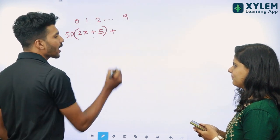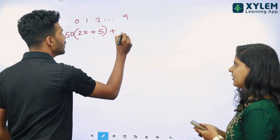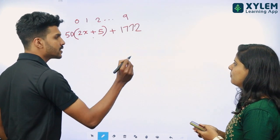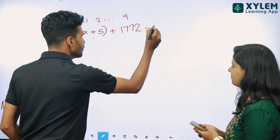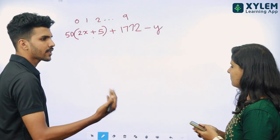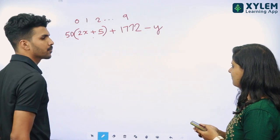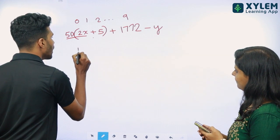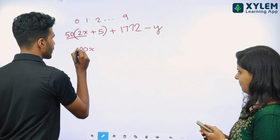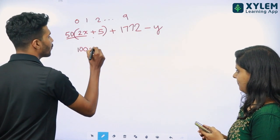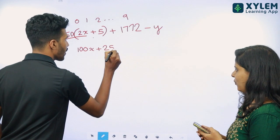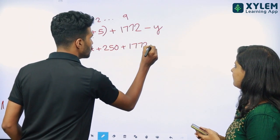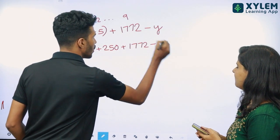Right? What do you say? 1, 7, 7, 2. What do you say? 1, 7, 7, 2. Minus y. The other one is y. 50 into 2x — 100x. 50 into 5 is 250. Plus 1, 7, 7, 2, minus y.